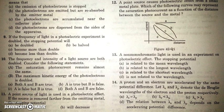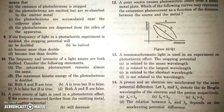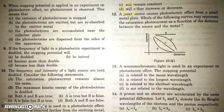Question eleven: a point source of light is used in a photoelectric experiment. If the source is moved farther from the emitting metal, the stopping potential remains unchanged. Stopping potential is independent of intensity — it depends only on the work function and frequency of incident light. Moving the source only changes intensity, so stopping potential stays the same — option C.